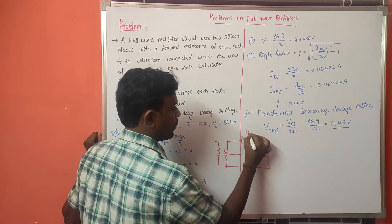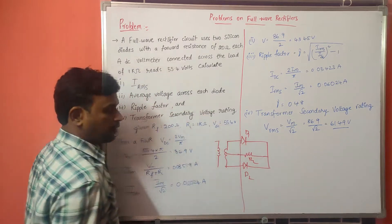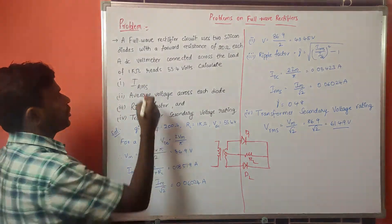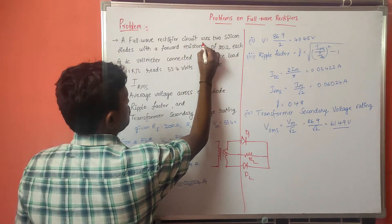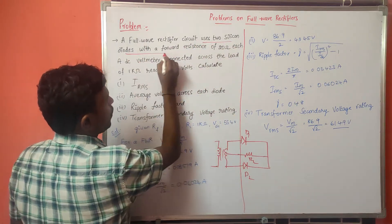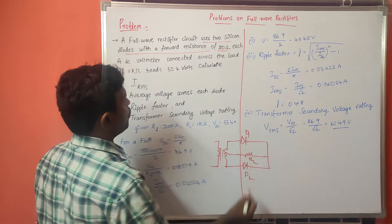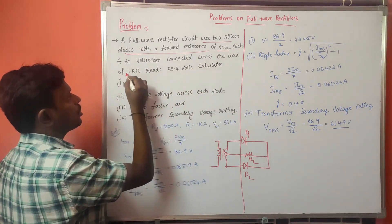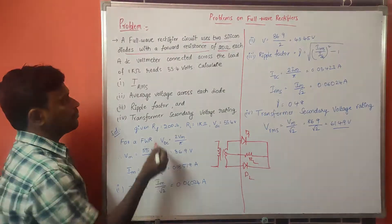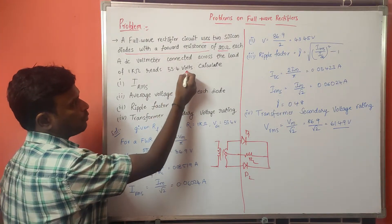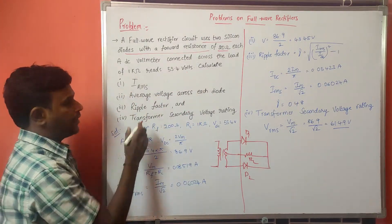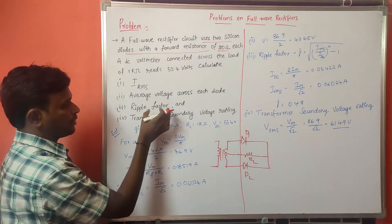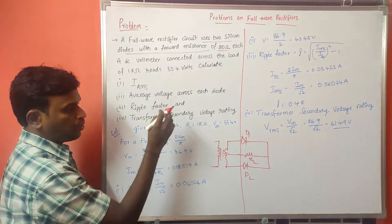This is the full wave rectifier. This one is the load and these are diodes D1 and D2. This is the center tap transformer. A DC voltmeter connected across the load of 1 kilo ohm reads 55.4 volts. We need to calculate the IRMS value, average voltage across each diode, ripple factor, and transformer secondary voltage rating.